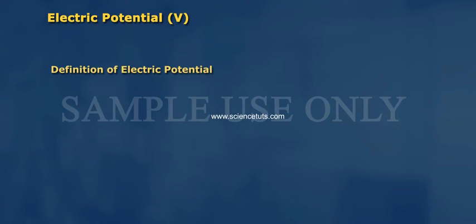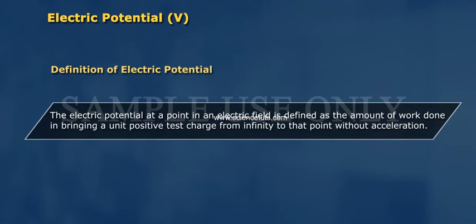Definition of Electric Potential: The electric potential at a point in an electric field is defined as the amount of work done in bringing a unit positive test charge from infinity to that point without acceleration.